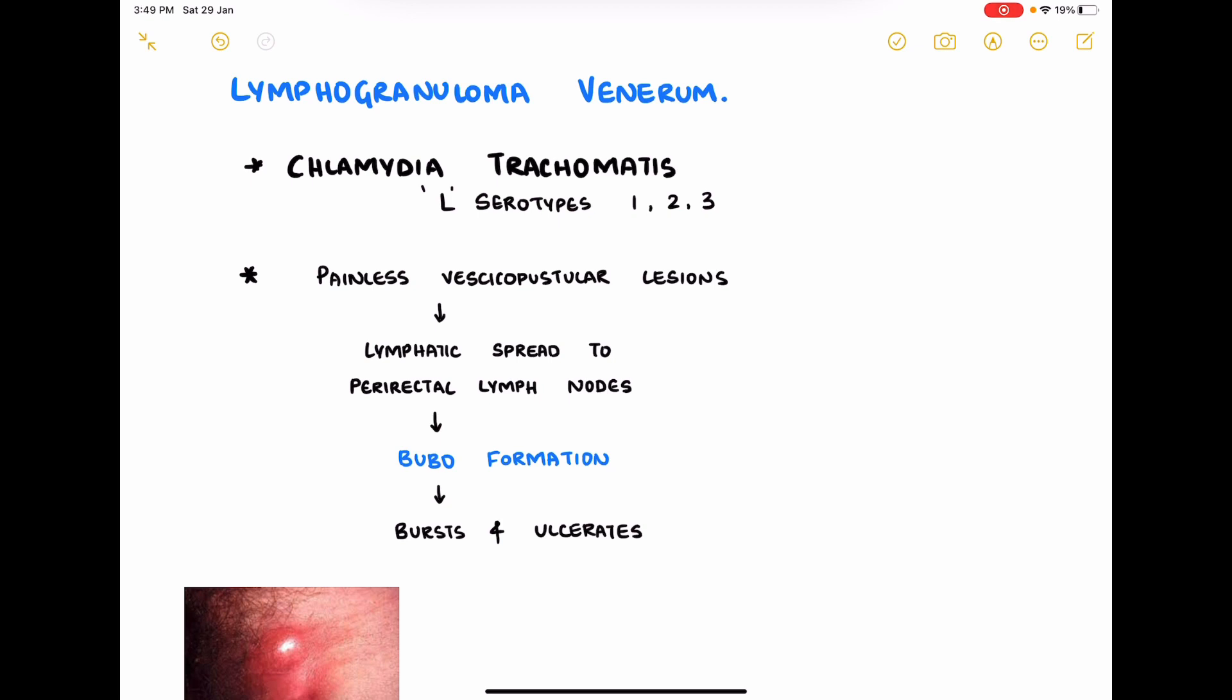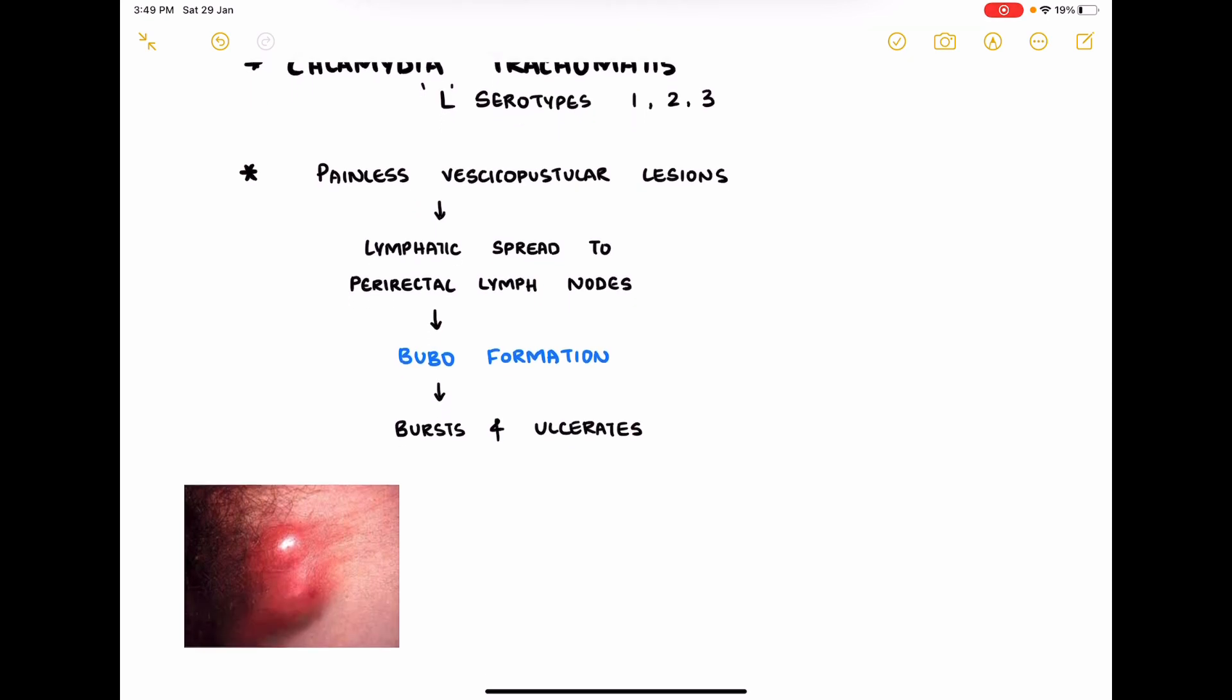After that, lymphatic spread occurs to the perirectal lymph nodes, and further there will be bubo formation, mainly in the inguinal lymph nodes, which is inflammation of the lymph node. The picture here shows a bubo, and this bubo can further burst and ulcerate in the inguinal or genital region.